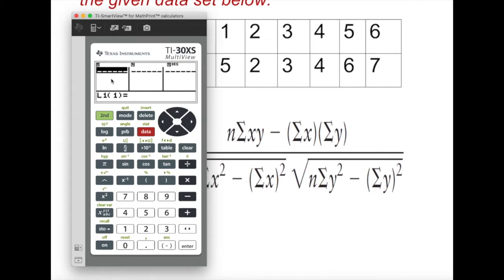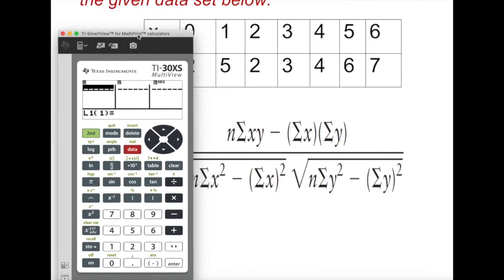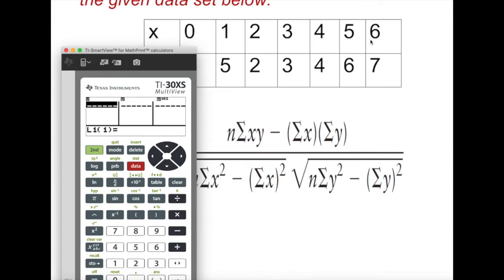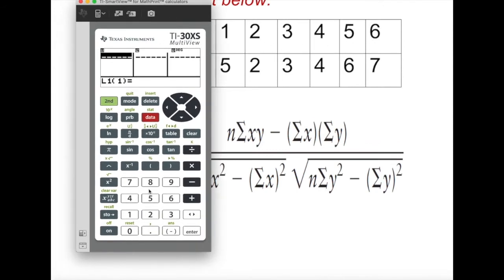I'm going to type in here under X1: 0, 1, 2, 3, 4, 5, 6. So I'm going to enter all of them: 0 enter, 1 enter, 2 enter, 3 enter, 4 enter, 5 enter, 6 enter. So I have all this data stored as my x value in L1.